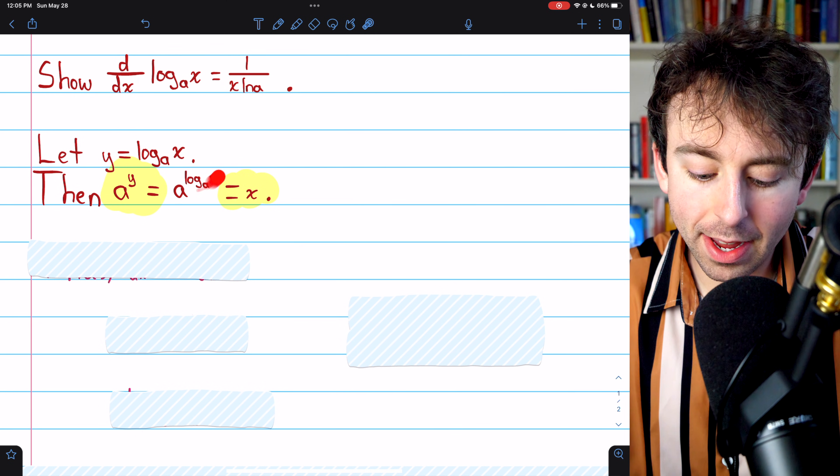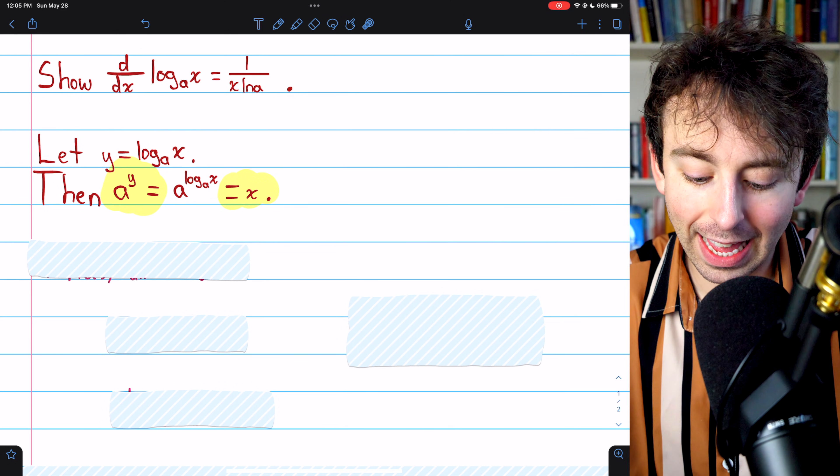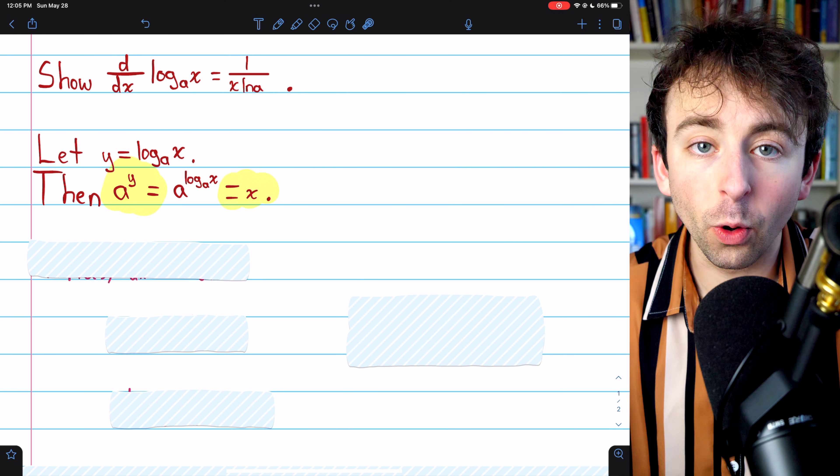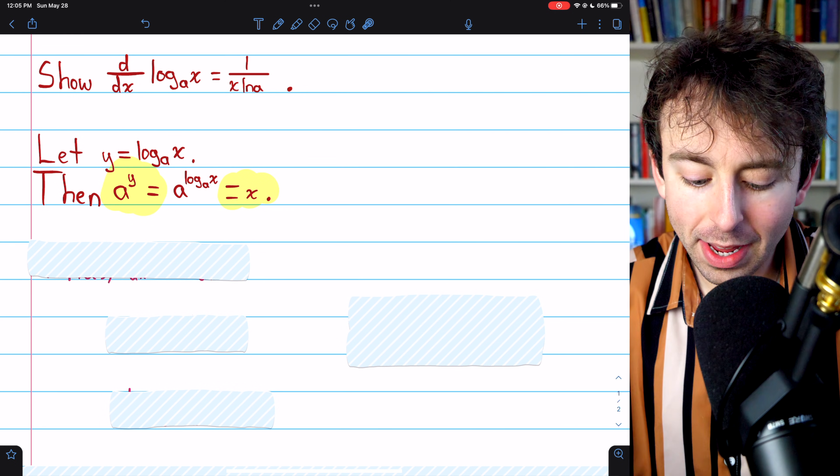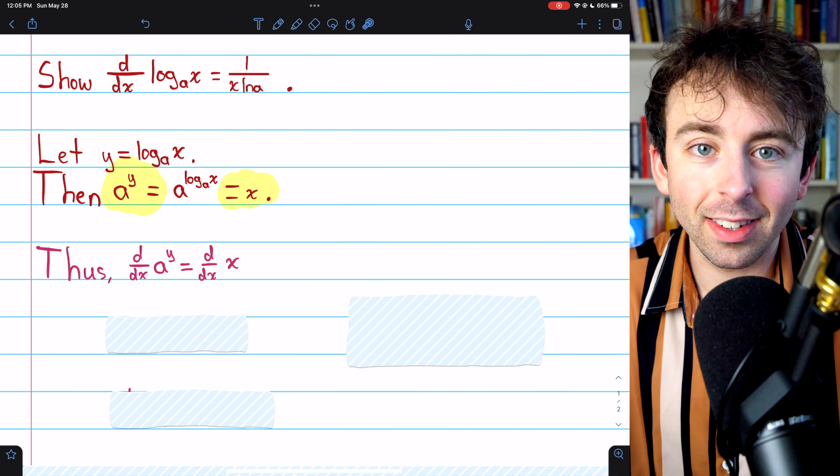Remember that log base a of x is the power we need to raise a to to get x. That's why this equation is true. So now that we have a to the y equals x, we'll just take the derivative of the left and the right side.